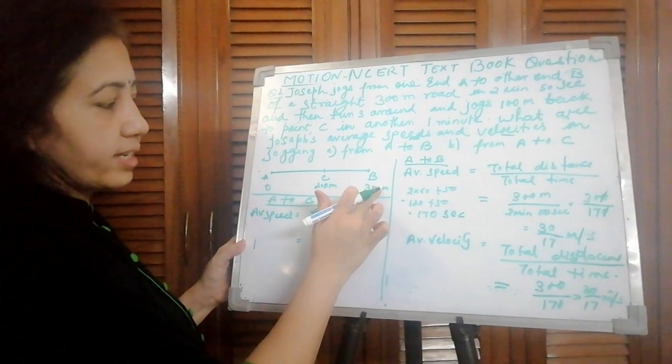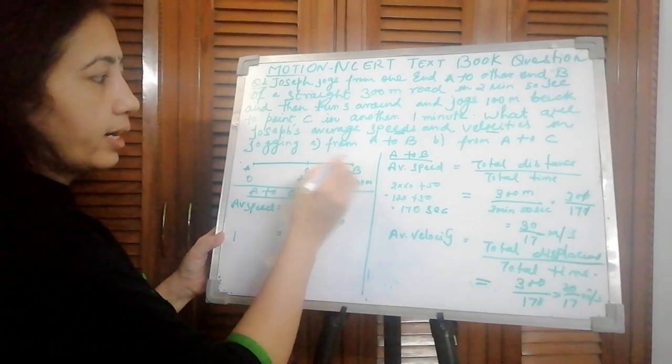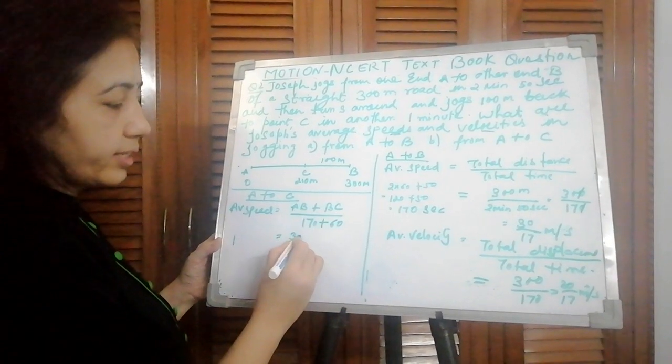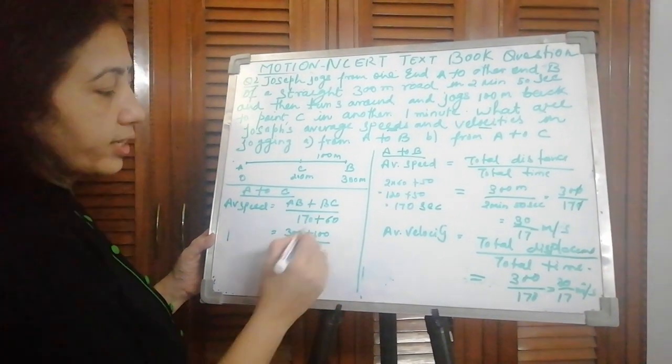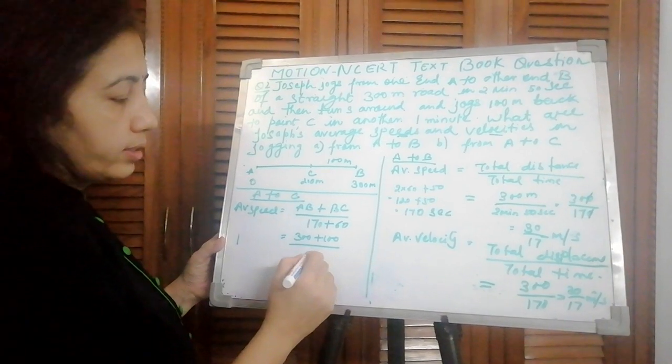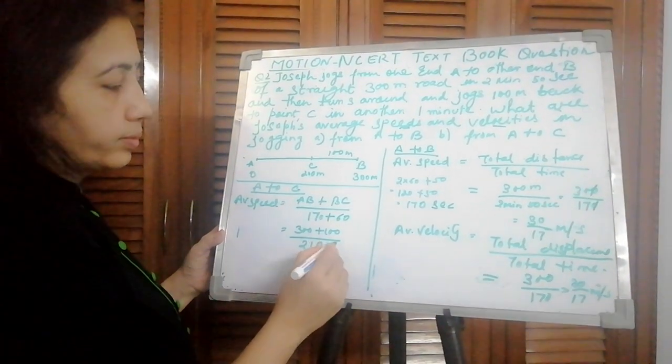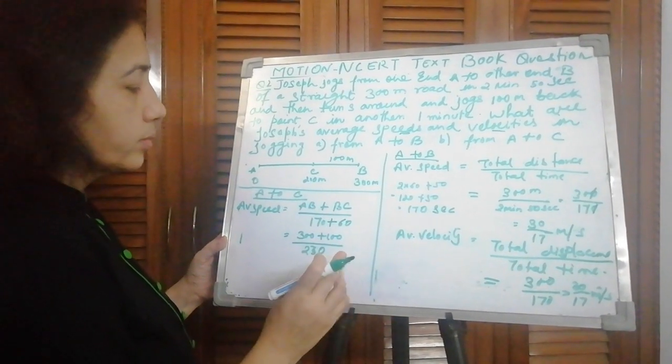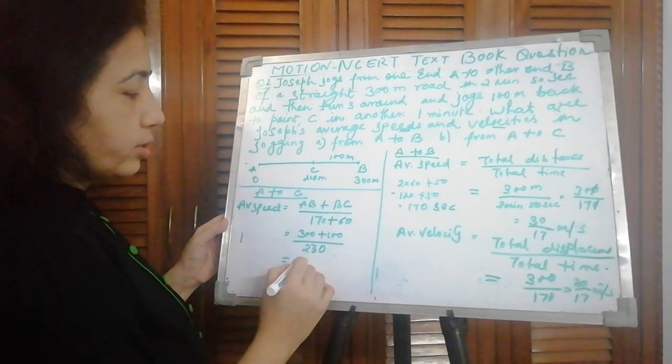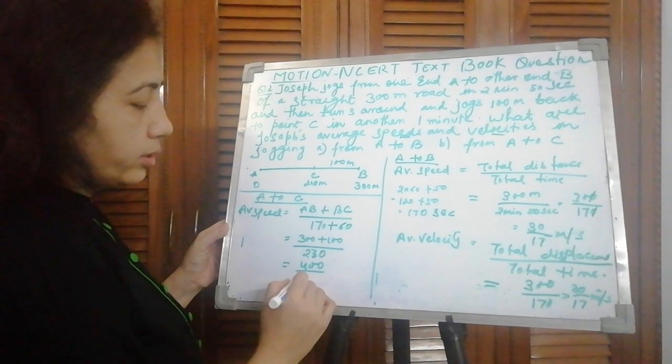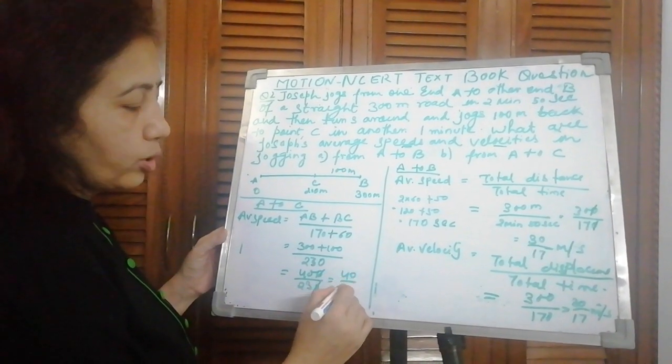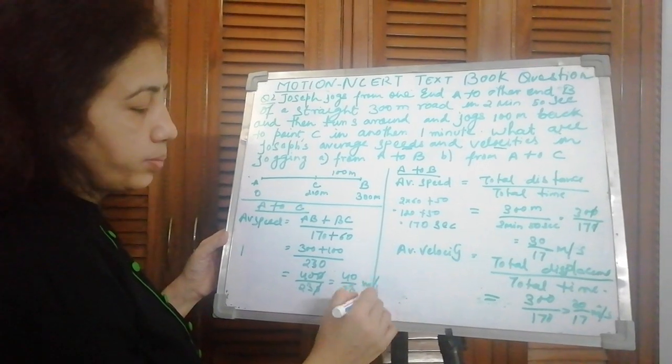300 from here to B, then BC, back he took 100 meters. So this becomes 300 plus 100, and time total is 230. That is 400 upon 230. Again cancel: 40 upon 23 meter per second.